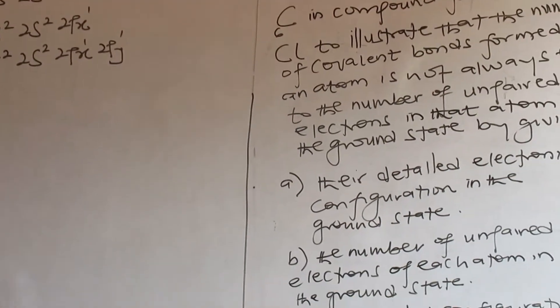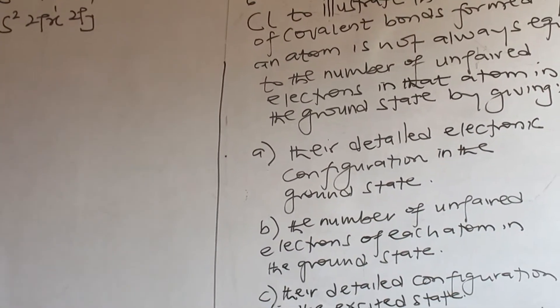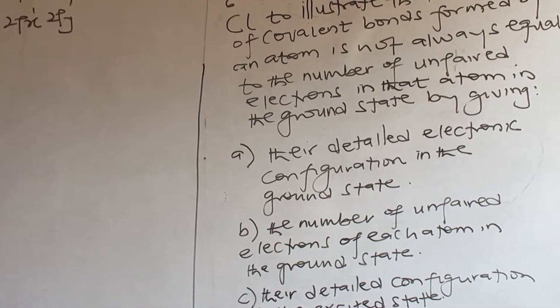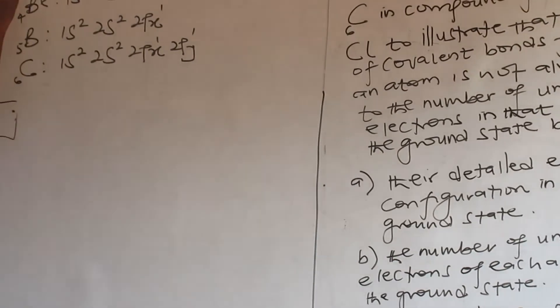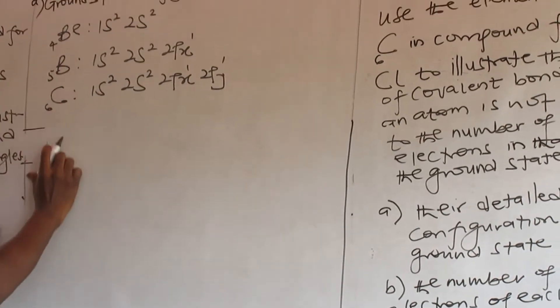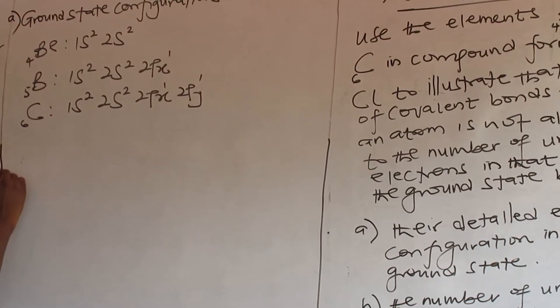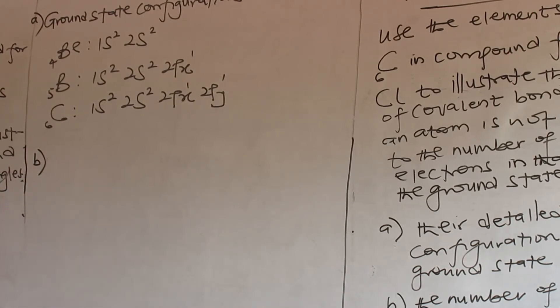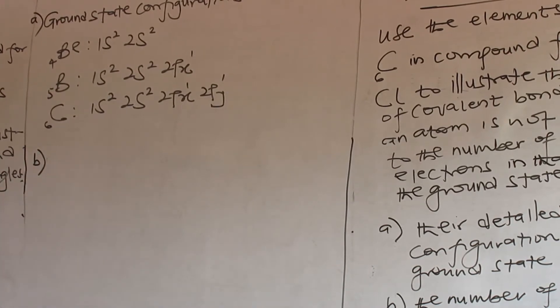From periodicity, the number of unpaired electrons of each atom in the ground state. Let's look at that. That is A.